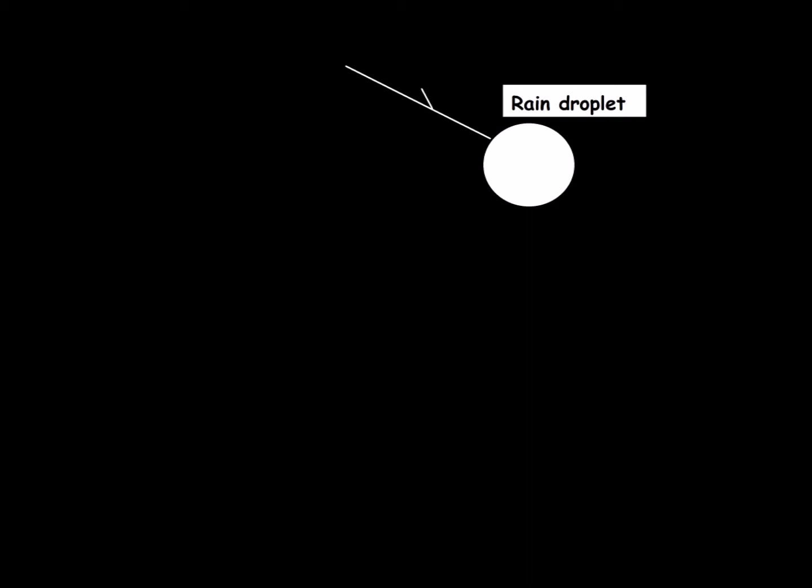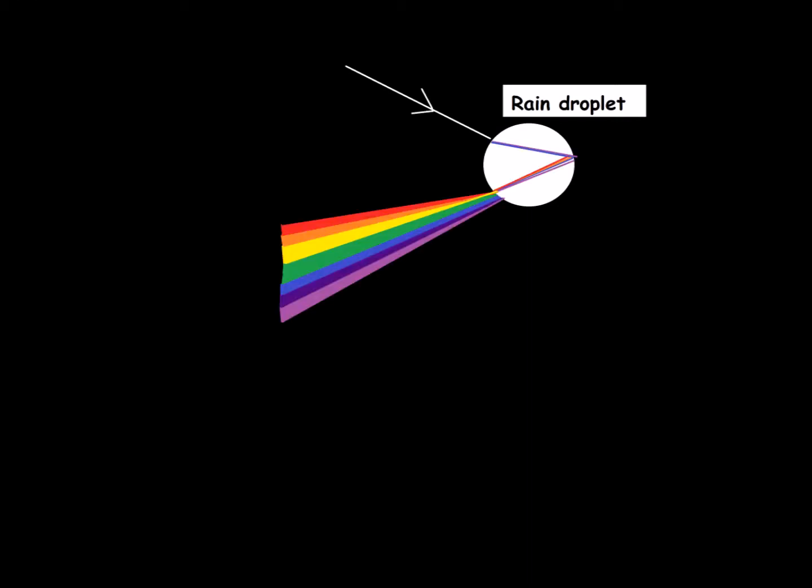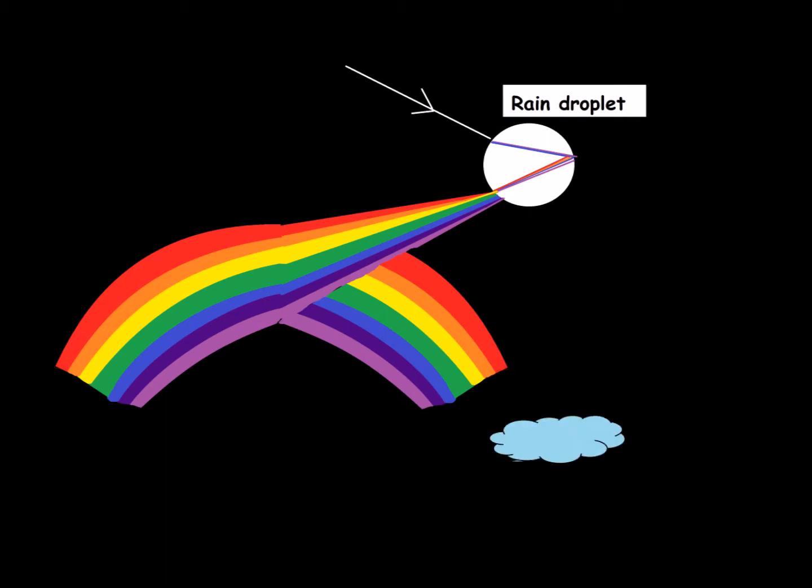The same way, when white light passes through rain droplets, it gets refracted and creates seven colors of the rainbow. This incident shows that light has seven colors.